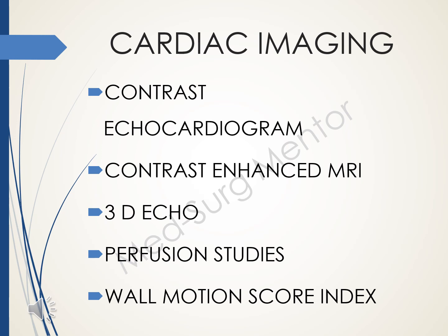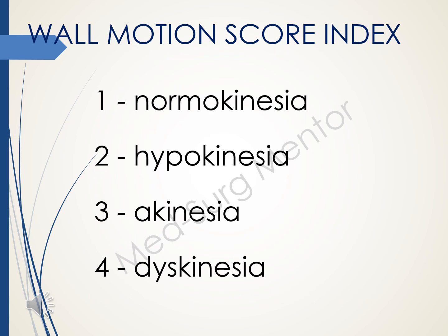Cardiac imaging techniques include contrast echocardiogram, contrast enhanced MRI, 3D echo, perfusion studies, and wall motion score index. Wall motion score index is divided into four categories: normokinesia, hypokinesia, akinesia, and dyskinesia.